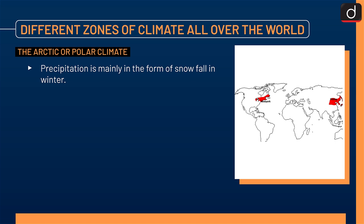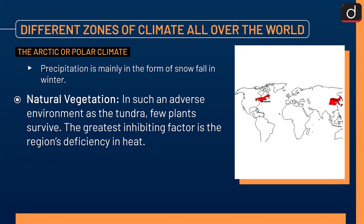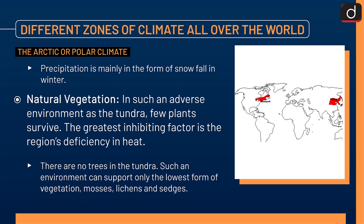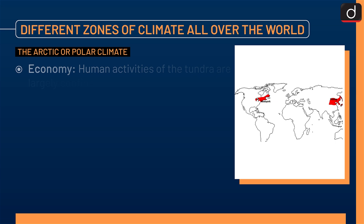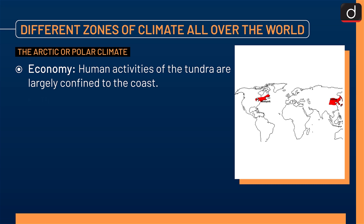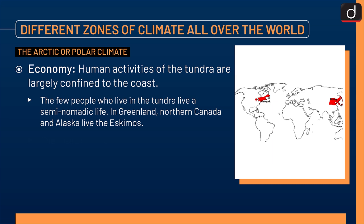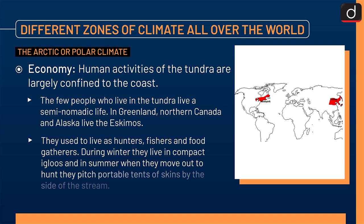Natural vegetation: in such an adverse environment as the tundra, few plants survive. The greatest inhibiting factor is the region's deficiency in heat. There are no trees in the tundra. Such an environment can support only the lowest form of vegetation — mosses, lichens and sedges. Economy: human activities of the tundra are highly confined to the coast. The few people who live in the tundra live a semi-nomadic life. In Greenland, Northern Canada and Alaska live the Eskimos. They used to live as hunters, fishers and food gatherers. During winter they live in compact igloos, and in summer when they move out to hunt, they pitch portable tents of skins by the side of the stream. Their food is derived from fish, seals, walruses and polar bears.